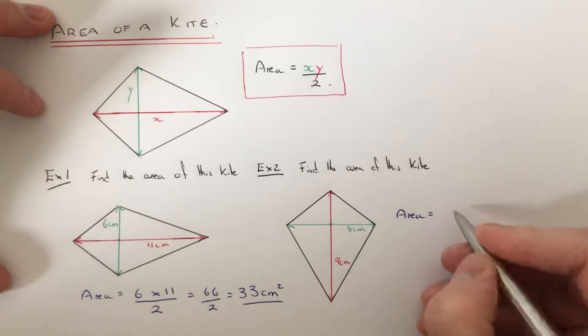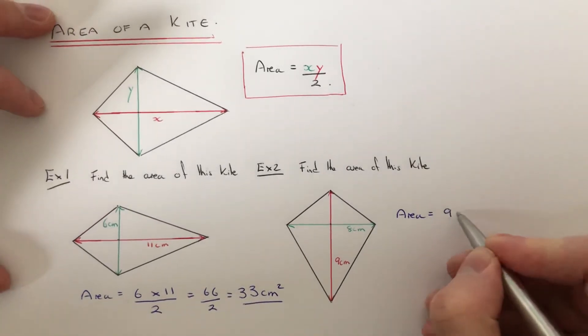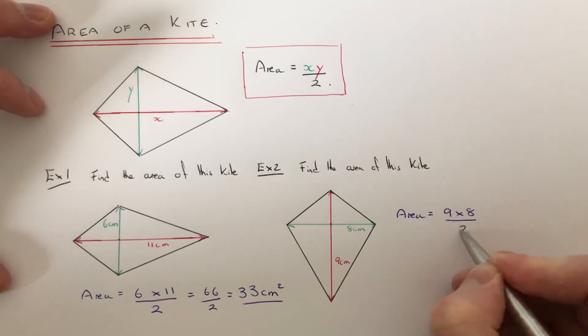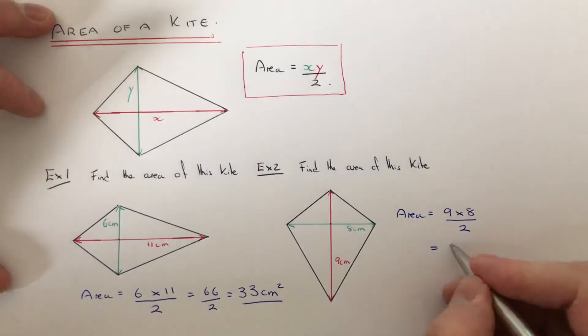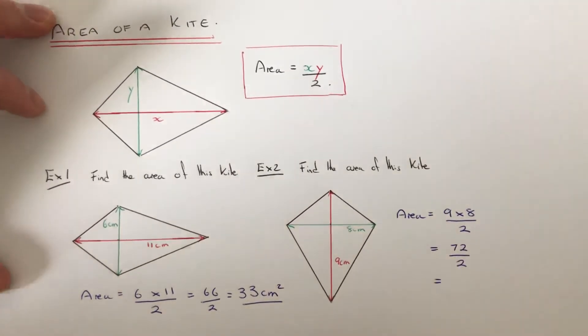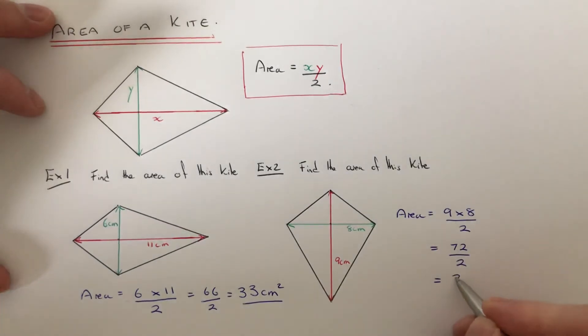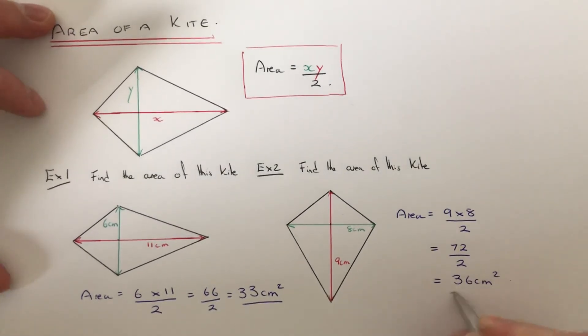To work out the area, we just need to multiply these two diagonals together and divide it by 2. So 9 times 8 is 72, and then we just need to halve the answer. So half of 72 is 36cm².